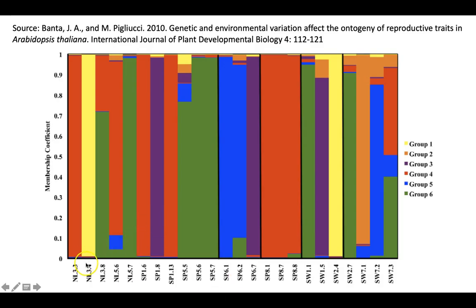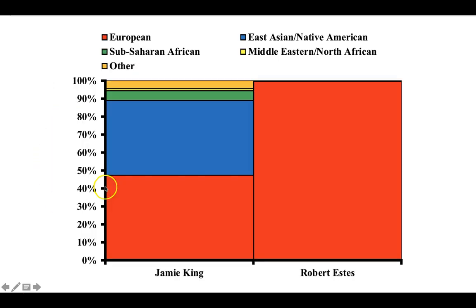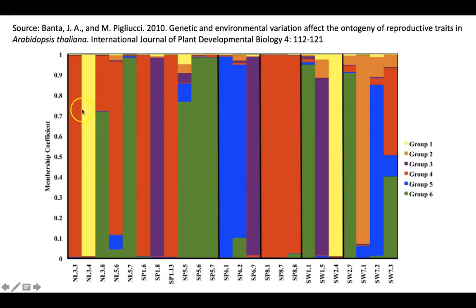This graph may be difficult to interpret at first, but it's like the other ones you saw. The coefficients go from zero to one, but these could just as easily be percentages — so you can think of them as 10%, 20%, 30%, 40%, and so on.